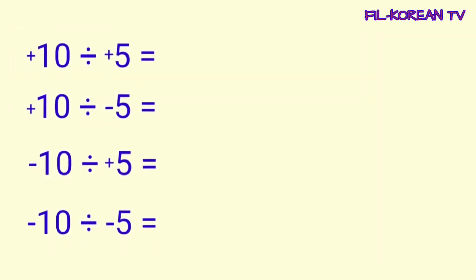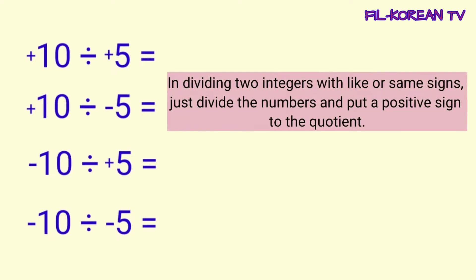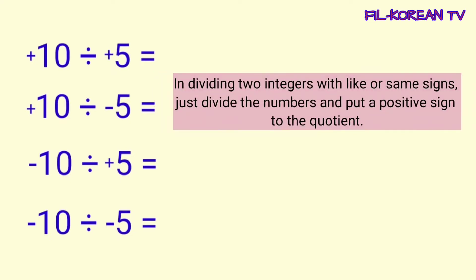Let's use these problems as an example. But first, let's know the rules in dividing integers. In dividing two integers with like or same signs, just divide the numbers and put a positive sign to the quotient.